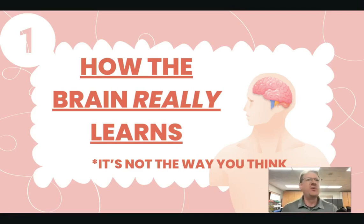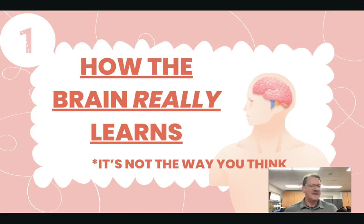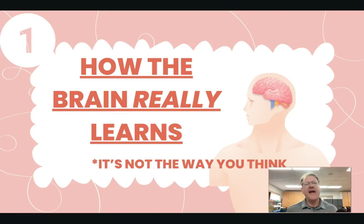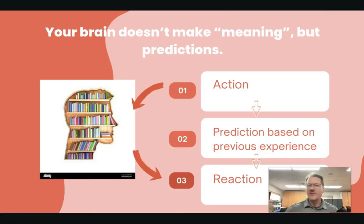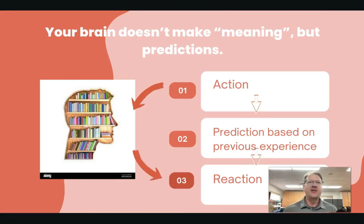The first one is how the brain really learns. This is important to know because it explains why any of us do what we do. It explains why our students act a certain way in class, why a student will like a certain class over another class, or like a certain teacher over another teacher.